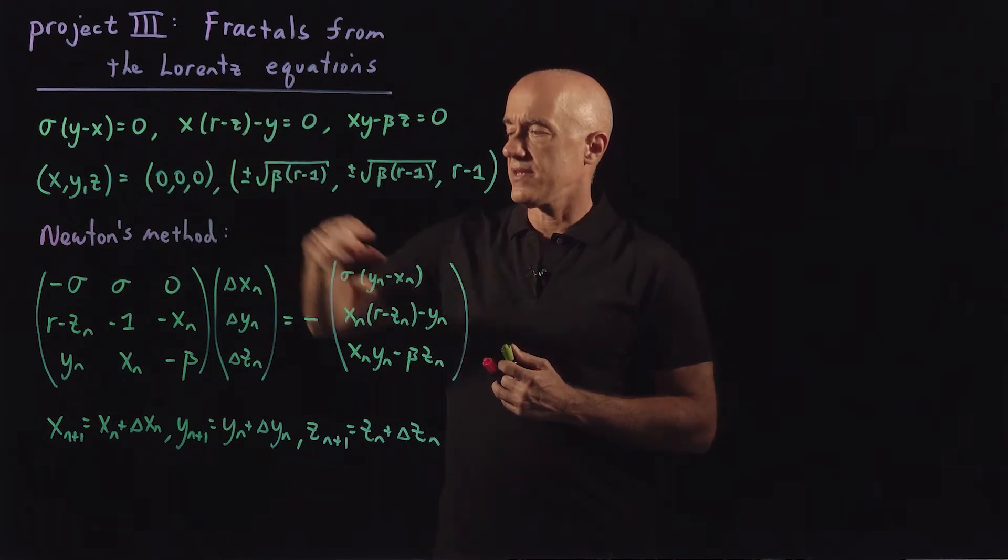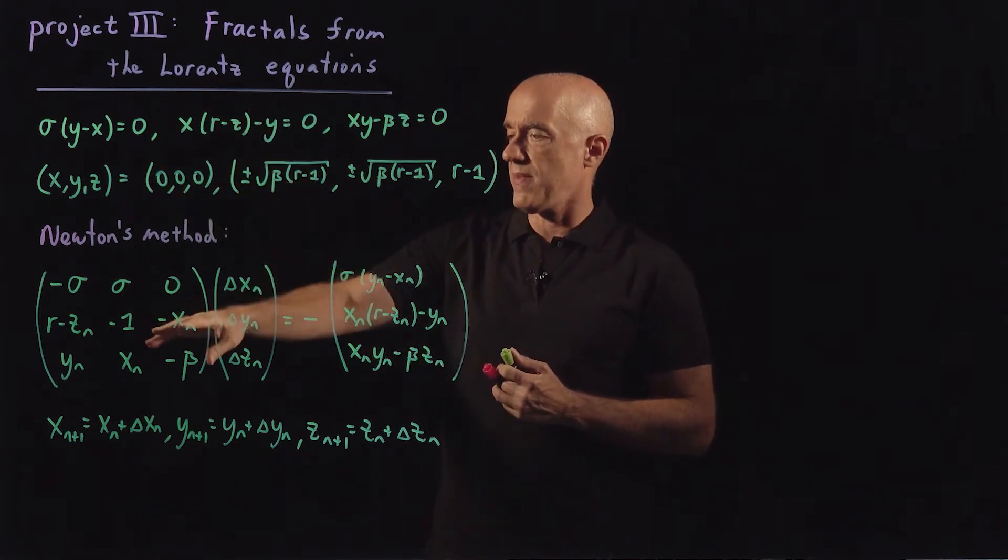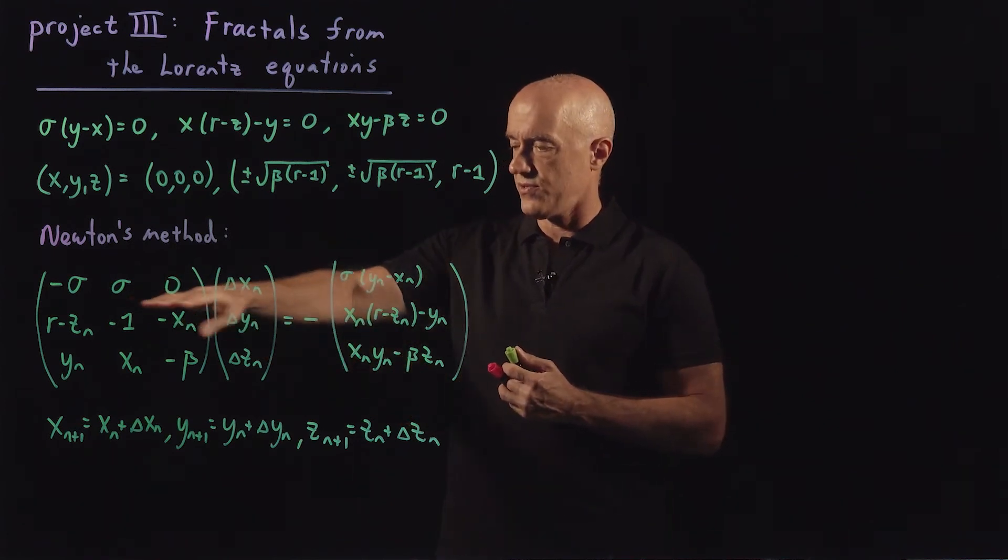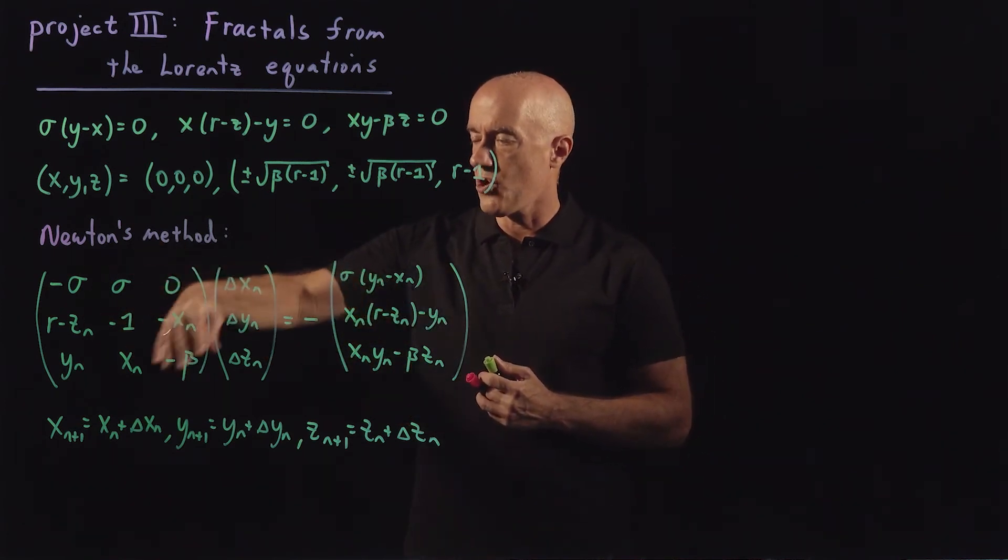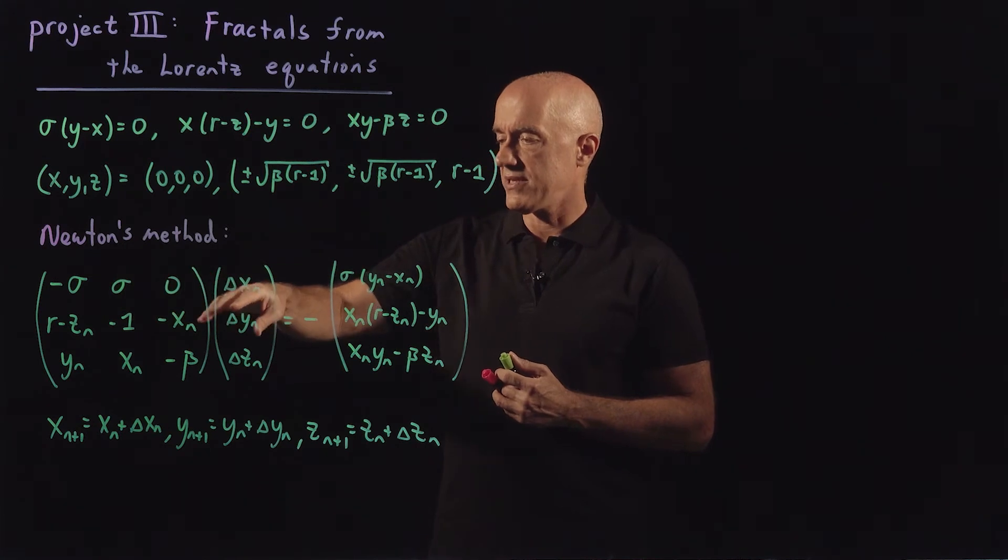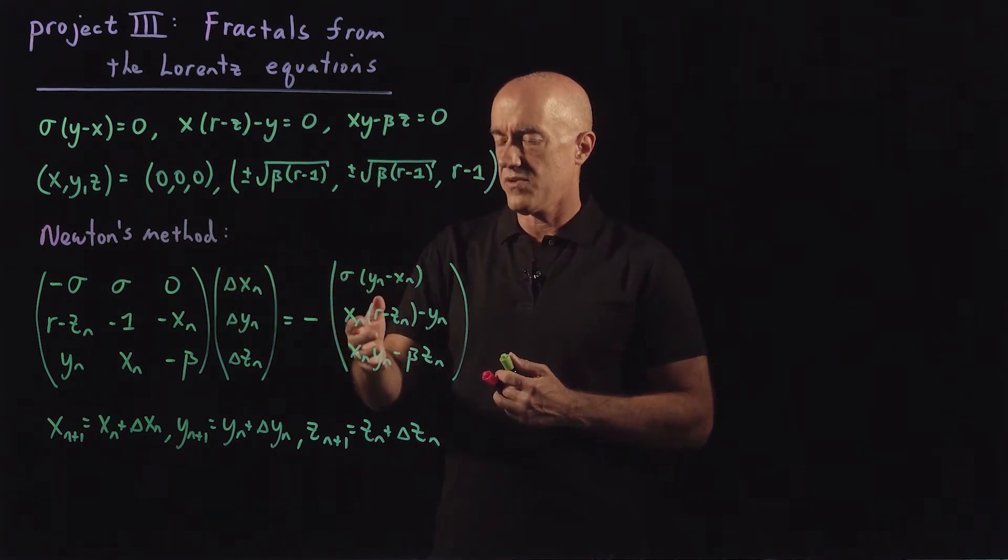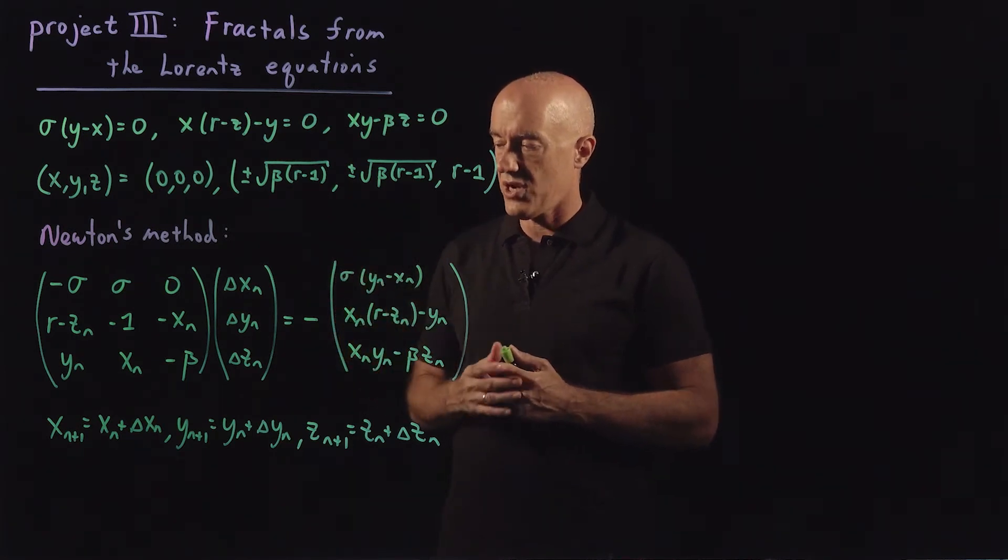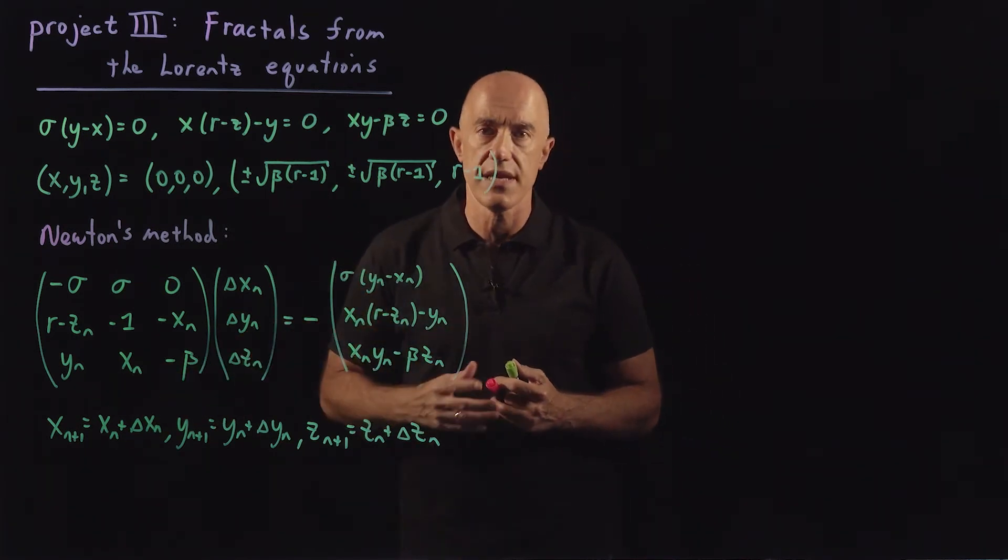You can find these solutions using Newton's method. So we already wrote down the iteration you need to do that. It's the Jacobian matrix times this delta x, delta y, delta z equals the negative of f, g, and h on the right hand side. And we do an iteration.